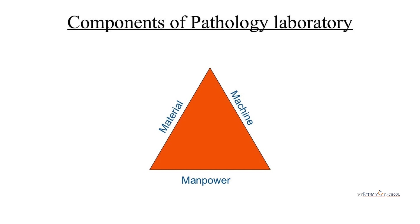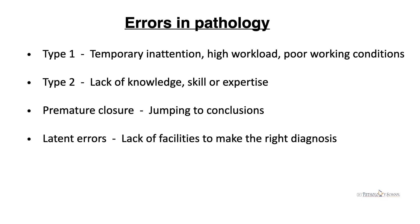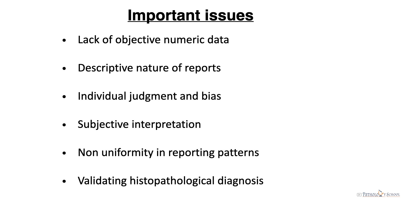Errors can happen at any level — at the material, machine, and manpower level. Type 1 errors occur because of temporary inattention in cases of high workload and poor working conditions. Type 2 errors happen because of lack of knowledge, skill, or expertise. Premature closure occurs when we jump to conclusions without any peer review. Latent errors are due to lack of facilities to make the right diagnosis.